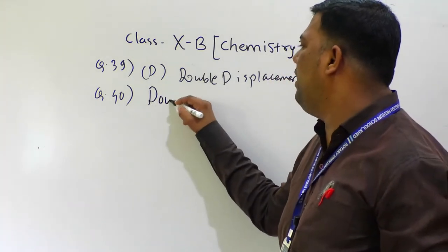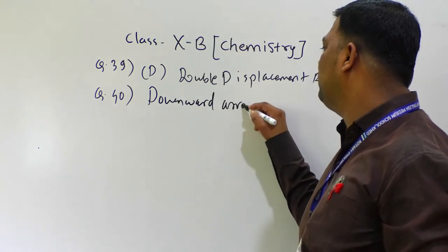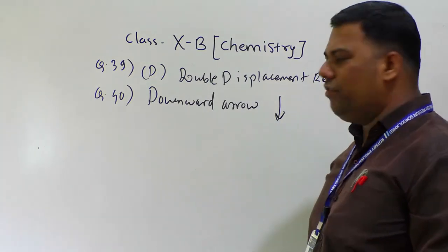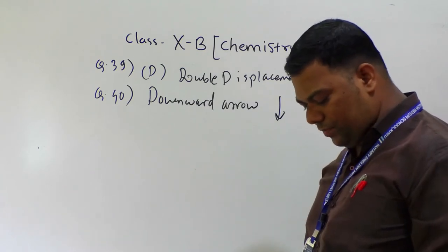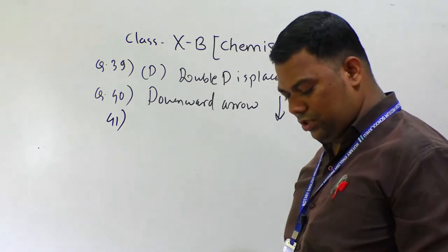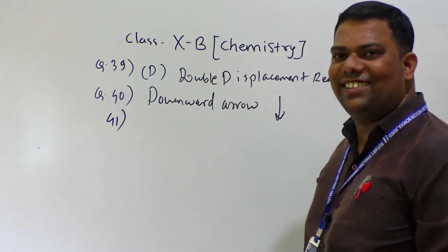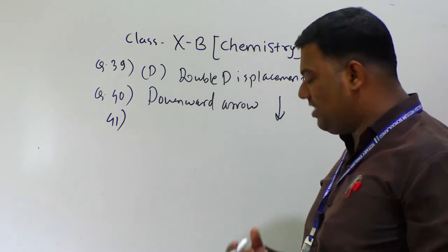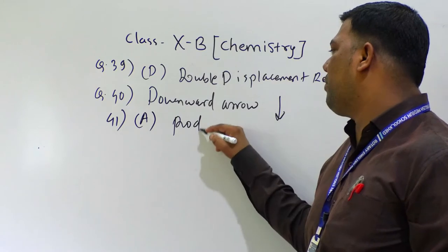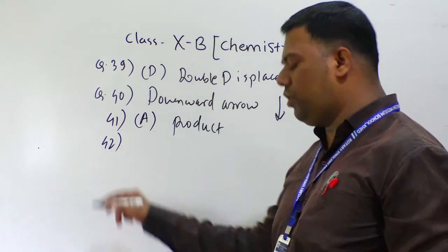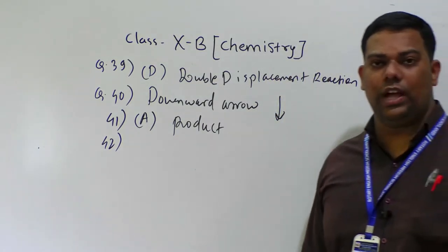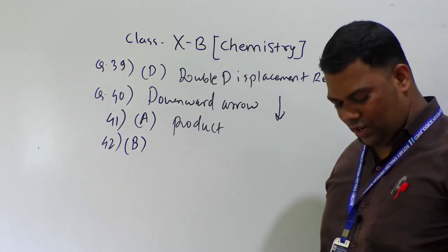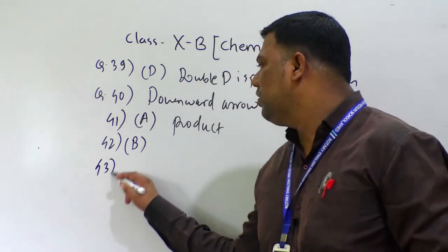Question number 40: a precipitate formed in a reaction is shown by a downward arrow. For example, AgCl and BaSO₄ precipitates are shown with a downward arrow. Question number 41: substance formed during the reaction is called the product. Question number 42: the reaction 2Na + Cl₂ gives 2NaCl — this is a combination reaction, answer is option B.